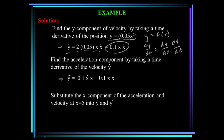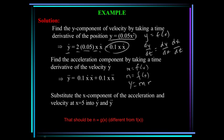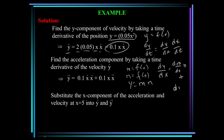To find the acceleration component, we take the time derivative of y-dot using the product rule. The derivative of 0.1x times x-dot gives: 0.1 times x-dot squared plus 0.1 times x times x-double-dot. Now we have equations for y-dot and y-double-dot, and we can substitute in the known x components of velocity and acceleration.